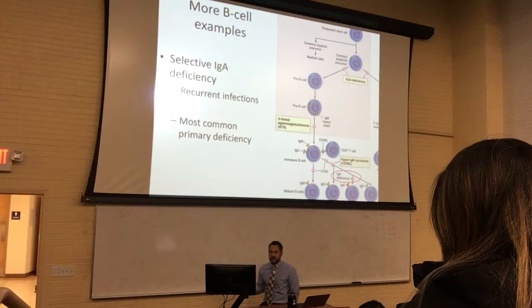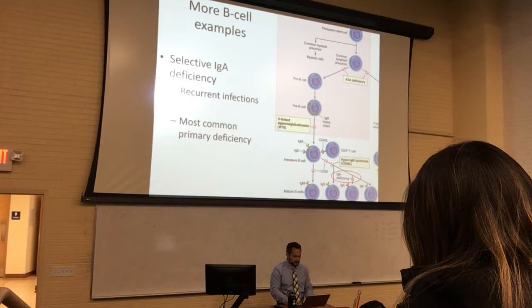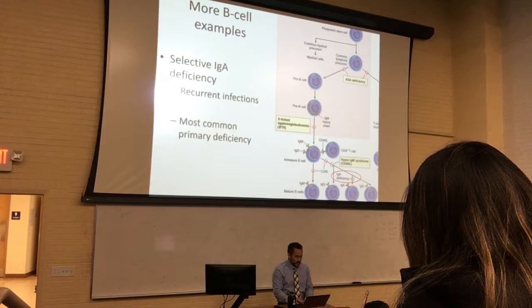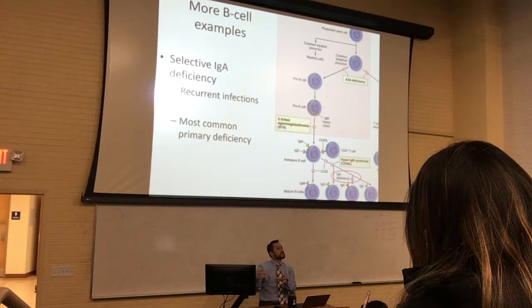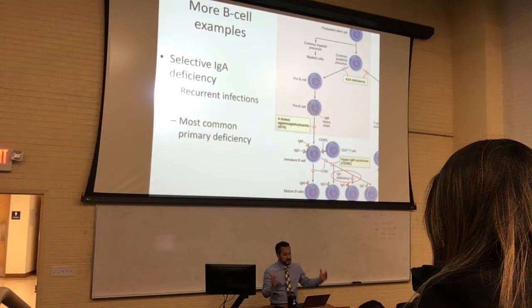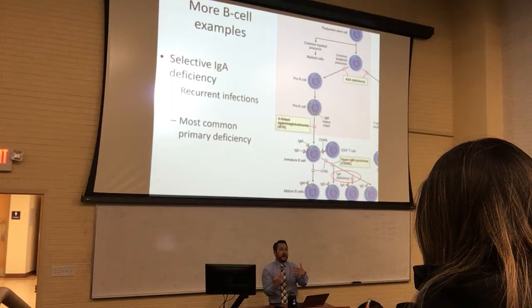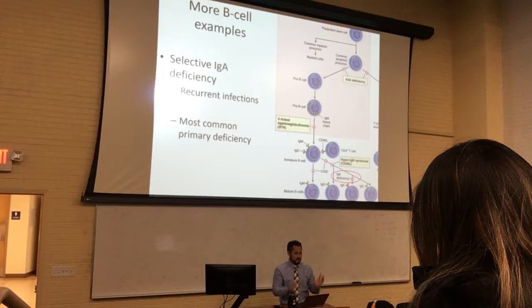One more B cell example — actually the most common primary deficiency. This is a selective IgA deficiency. If it's selective IgA, they don't make IgA, but they do make IgE, IgG, and IgM, and they make T cells. This is more common than Bruton's disorder. Bruton's is pretty aggressive. In these patients, they're very susceptible to recurrent infections, especially where IgA is most commonly used — found in the blood and body secretions. So they develop skin infections and systemic infections more so than normal, because they don't make IgA. But they have everything else.